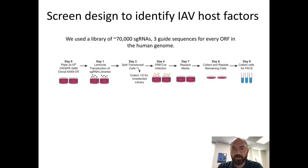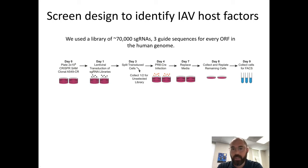The screen we performed uses guide RNAs that tell Cas9 which gene to activate. We used a large library with three specific sequences for every open reading frame in the human genome. Guide RNAs are delivered so each cell gets only one, meaning every cell in the dish is upregulating a different gene. We then apply the virus and let it kill any cells it can. After the virus is done, we collect and sort the remaining cells — separating the green ones from the non-green ones.